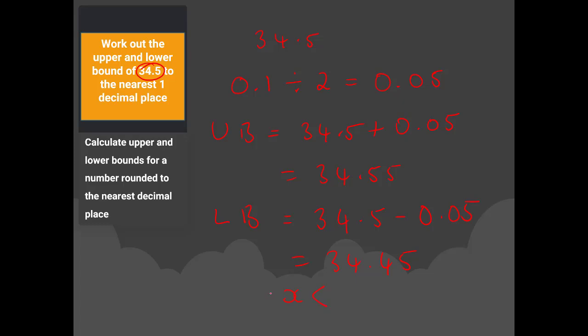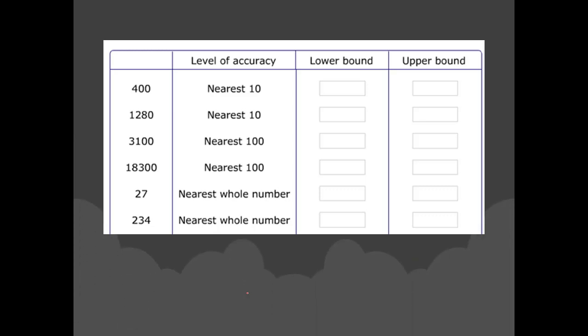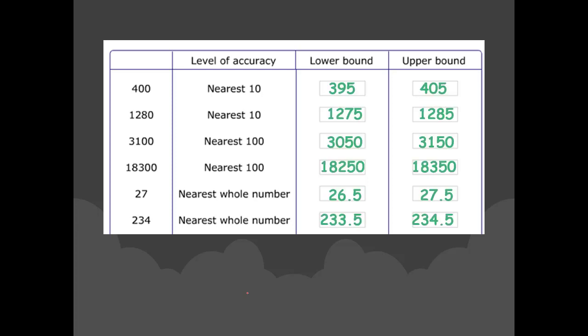Written as a range: the upper bound 34.55 goes on the right-hand side, and the lower bound 34.45 goes on the left-hand side. Now we're going to move on to some practice questions — pause the video, have a go, write down your answers, then resume to mark them.